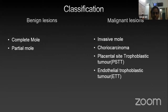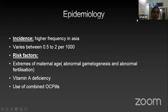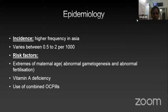On classifying, they are divided into benign and malignant lesions. Benign lesions include complete mole and partial mole. Malignant lesions include invasive mole, choriocarcinoma, placental site trophoblastic tumor, and epithelioid trophoblastic tumor. Incidence: higher frequency is seen in Asia, varying between 0.5 to 2 per thousand population. Risk factors include extremes of maternal age due to abnormal gametogenesis and fertilization, deficiency of vitamin A, and use of combined oral contraceptive pills.